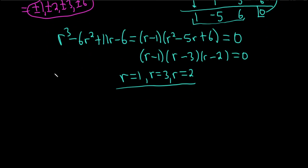So whenever you have distinct real roots to the characteristic equation, the answer will be of the form y equals, in this case it will be c1 e to the x, plus c2 e to the 3x, plus c3 e to the 2x.